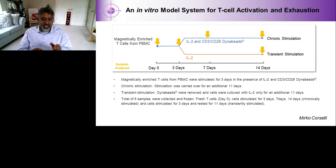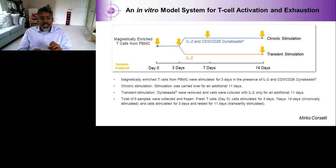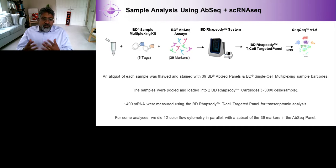We collect samples from five different time points and freeze them down for each of our donors. Fresh T-cells are collected at day zero. Cells stimulated for three days, seven days, and 14 days are collected — those are our chronic stimulation conditions. Additionally, we have the transient stimulation arm, where we stimulate cells for three days, rest them for 11 days, and collect that on day 14. So we have five different conditions done on three different donors.